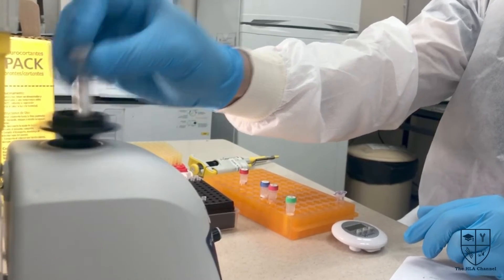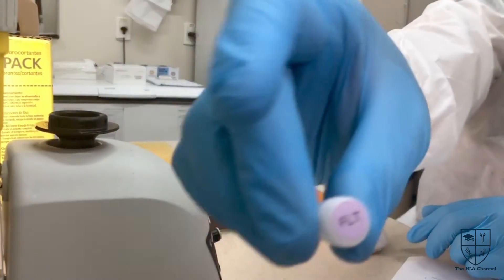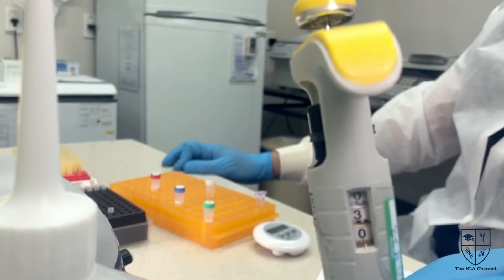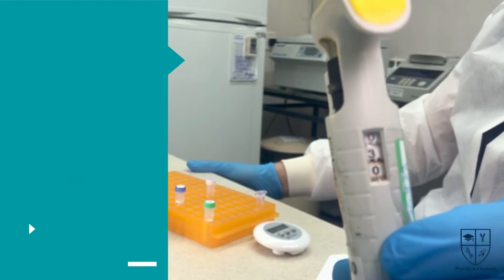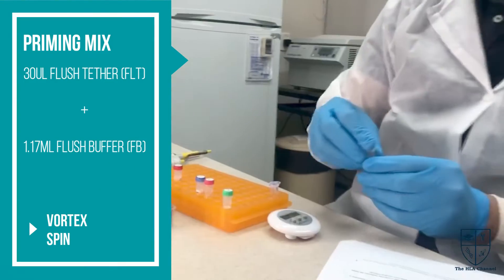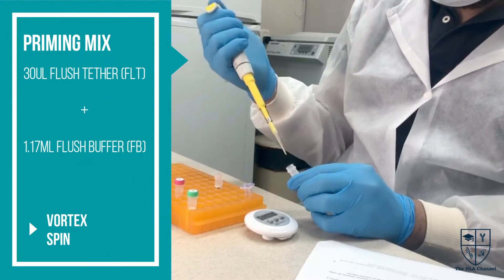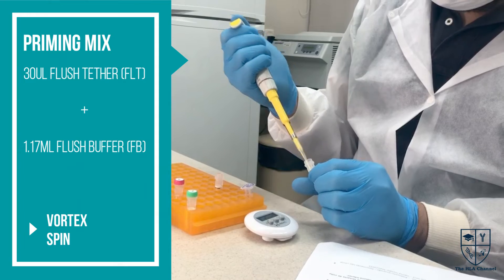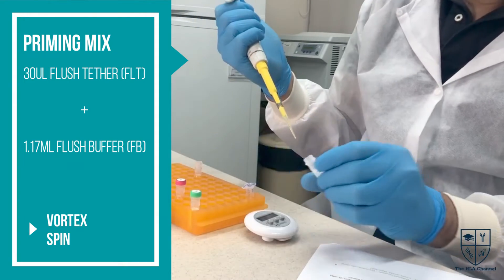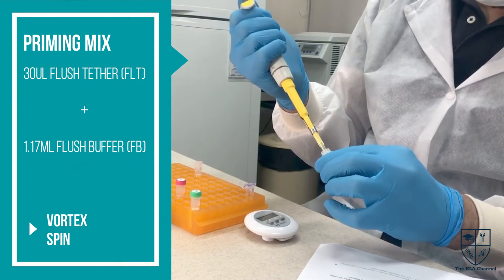Vortex the flush buffer and flush tether tubes. To prepare the flow cell priming mix, add 30 microliters of the flush tether (FLT) to 1.17 milliliters of flush buffer (FB). Vortex and spin down briefly. Reserve it.